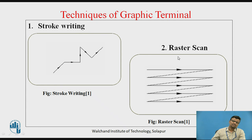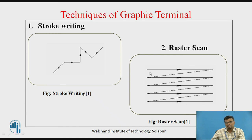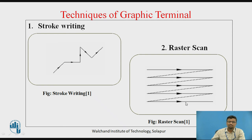There is another method called raster scan, which is always used with the graphic terminal. Suppose I want to create a line, arc, or circle — there will be the use of raster scan. The electron beam moves from one point to another, from left to right, for the creation of lines or curves. For a particular cycle it will be repeated, and whenever a 3D model, curve, line, or profile has been created, the cycle will be repeated.